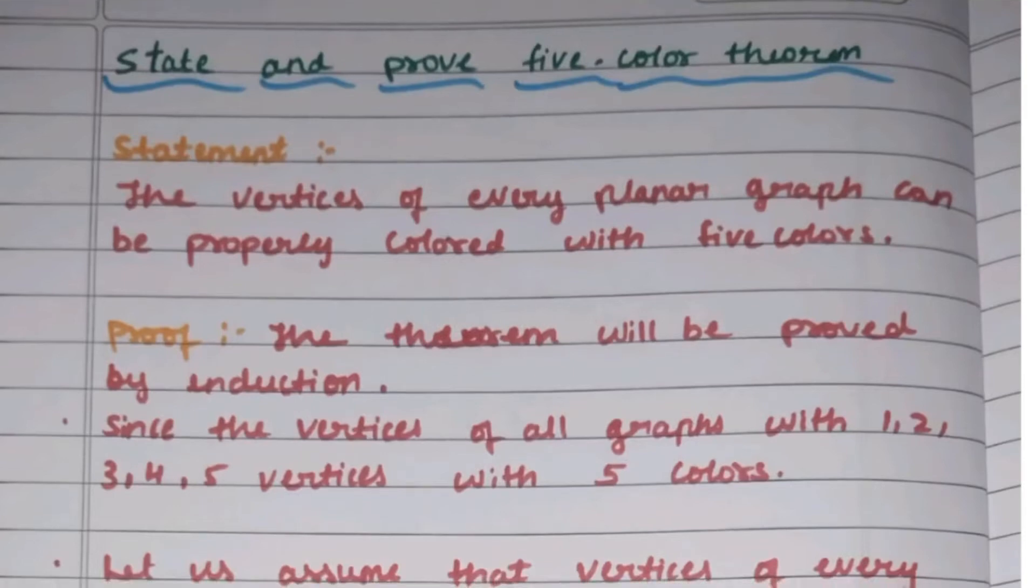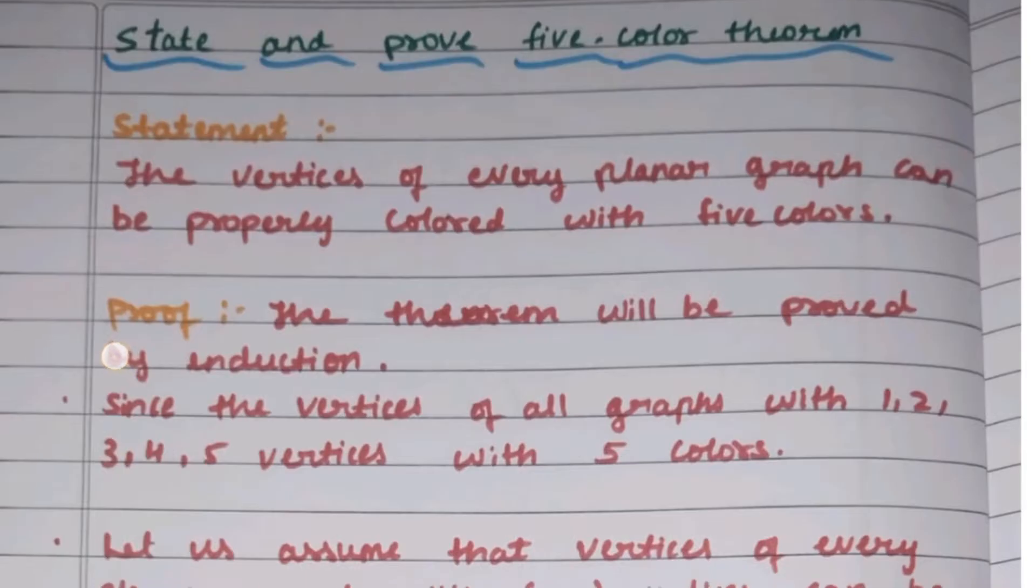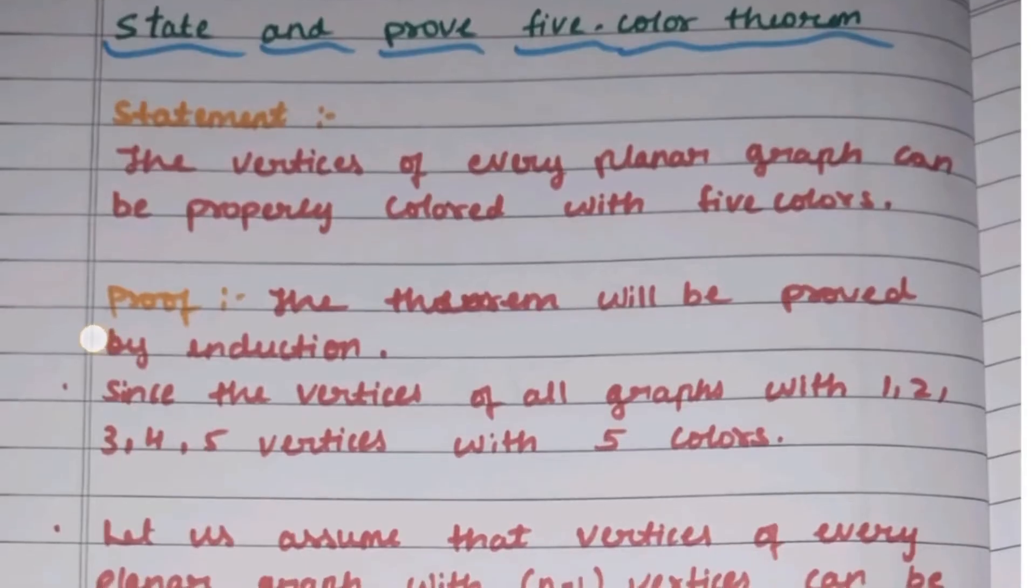Hello guys, welcome back to my YouTube channel. Today we will discuss Graph Theory Module 5. The important topic is to prove the 5-color theorem. The statement is: the vertices of every planar graph can be properly colored with 5 colors.